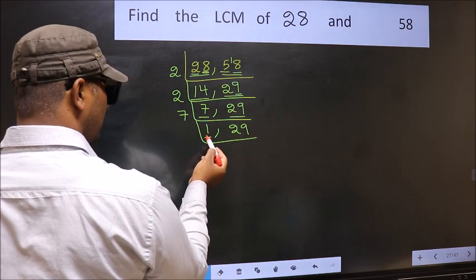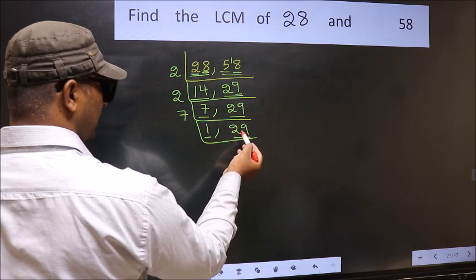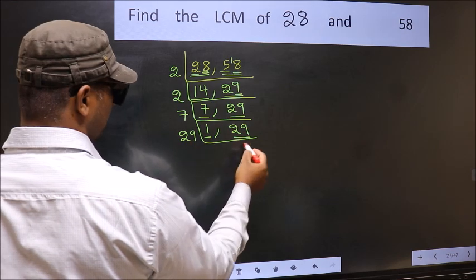Now we got 1 here, so focus on the other number 29. 29 is a prime number, so 29 once 29.